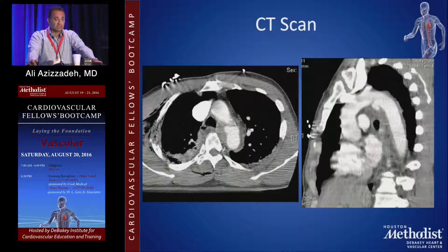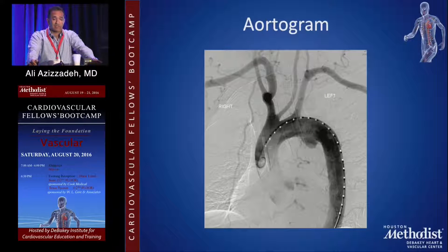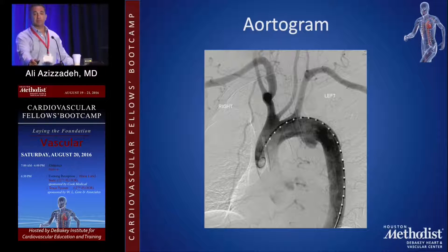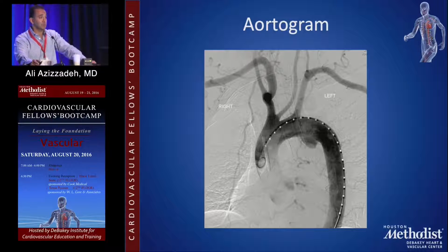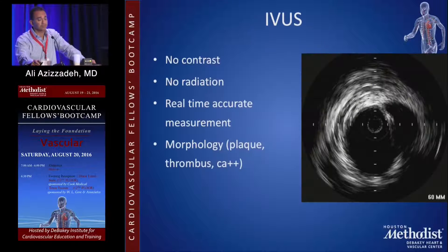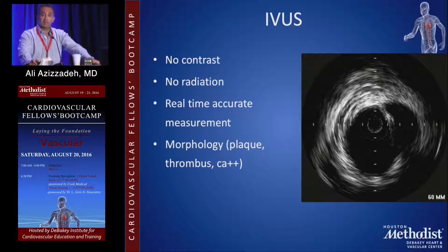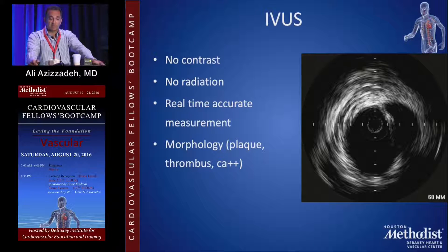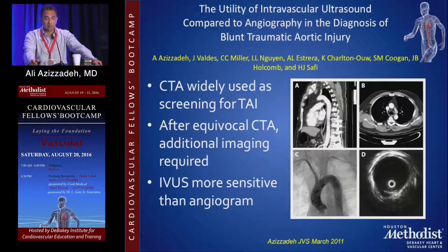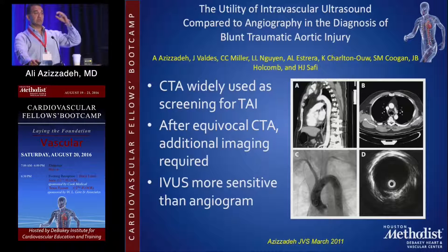These are examples of CT scans — this is an isthmus tear, you can see it's a grade 3 traumatic aortic injury. This is a diagnostic angiogram, mainly reserved for therapeutic time; you don't really do this for diagnosis anymore. Intravascular ultrasound is great — no contrast, no radiation, you get real-time measurements, morphological clues, plaque, thrombus, and you can see the injury. Here is a large pseudoaneurysm seen on IVUS.